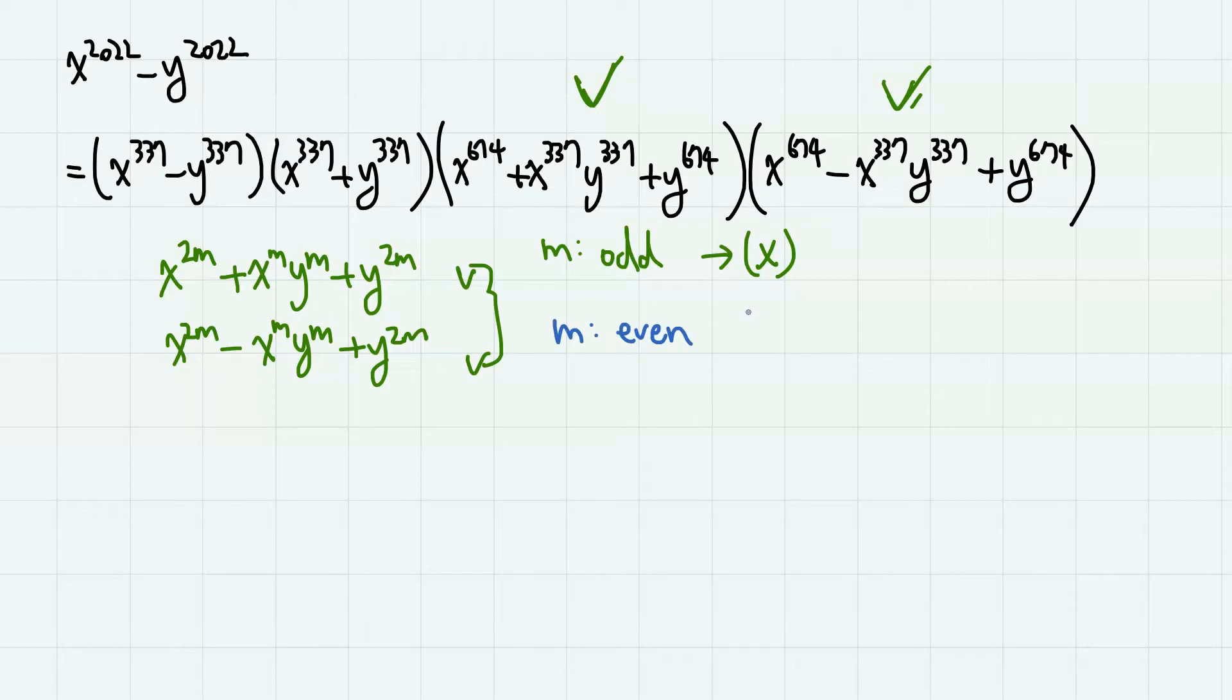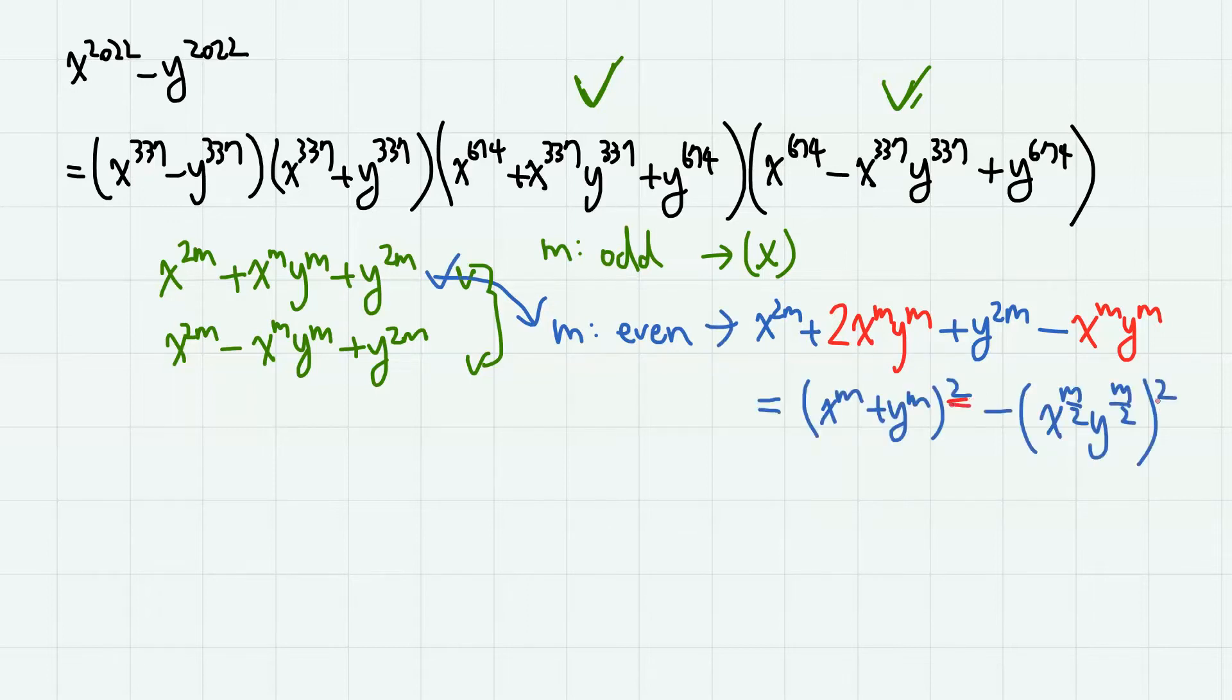But just FYI, when m is even, then the first one is actually factorable, because you can write down this polynomial like this and it becomes the square minus square type of polynomial. And the simplest case here is this formula, or you can easily derive this formula using this trick. But that is not our main concern here. So let's go back to our main problem. So these two are not factorable.